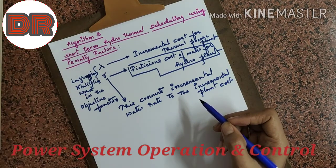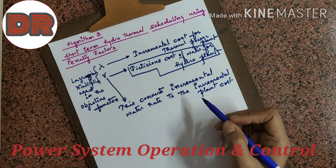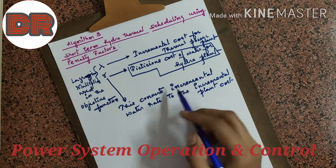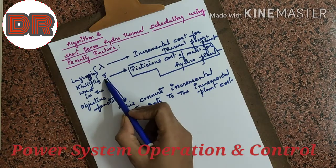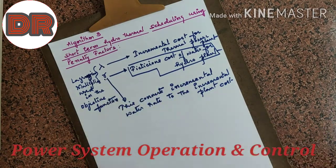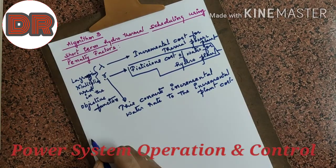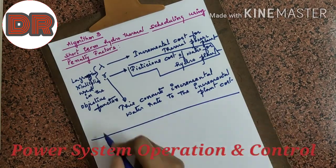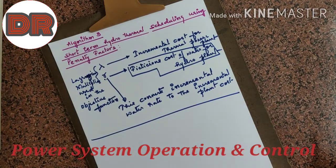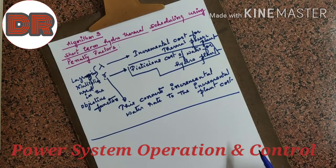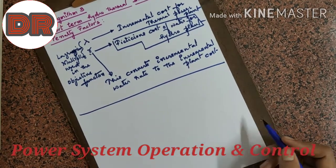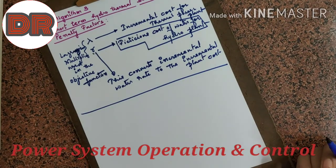The first term is for thermal and the second term, written previously using gamma, gives the incremental plant cost when gamma is multiplied with the water volume. We will make use of all these terms again in the third algorithm, and we will see what the penalty factor is and how to schedule the hydro and thermal power plants.